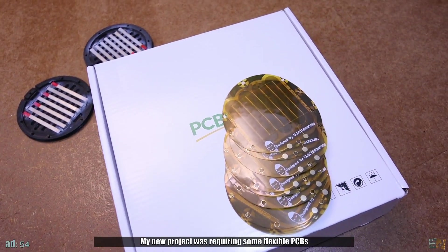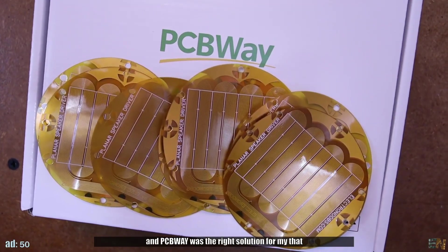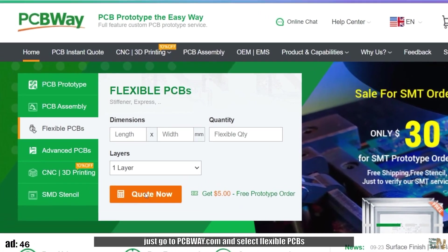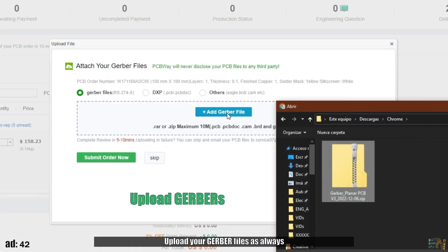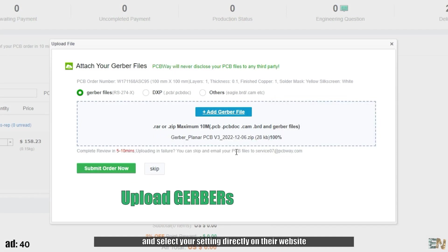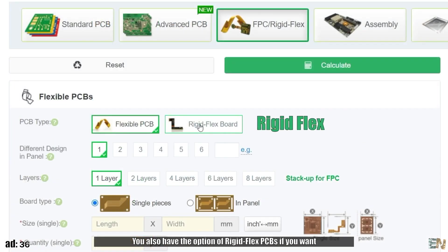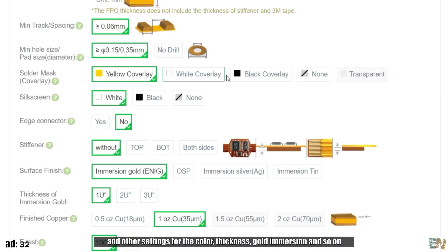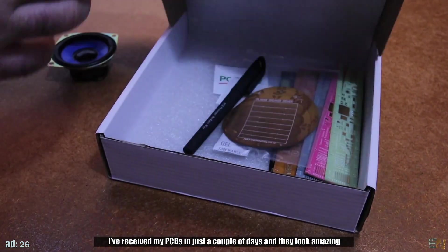My new project was requiring some flexible PCBs and PCBWay was the right solution for that. The order process is so simple, just go to PCBWay.com and select flexible PCBs. Upload your Gerber files as always and select your settings directly on their website.